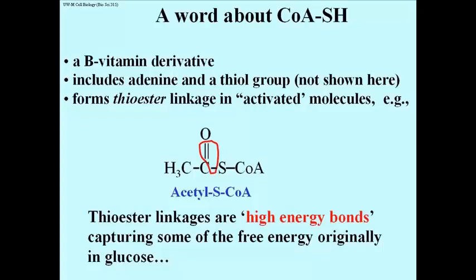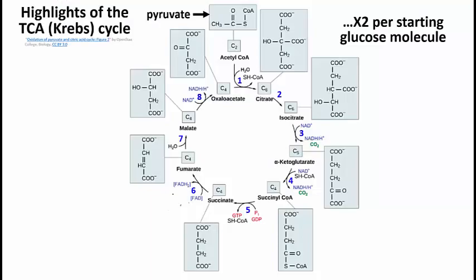So the thioester linkage in Acetyl Coenzyme A has now captured, at least for the moment, some of the free energy that was originally in the nutrient glucose way at the top of glycolysis.